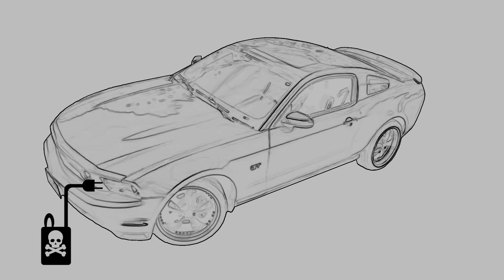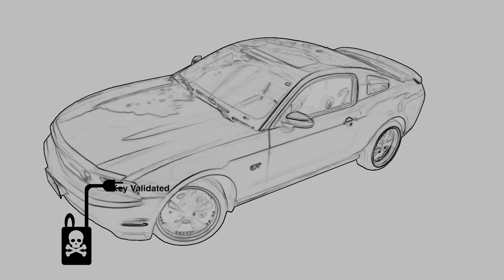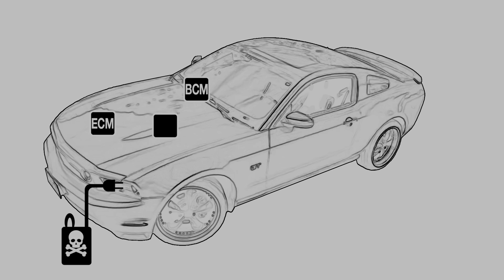Once the CAN injector is connected to the CAN bus, it sends key-validated signals as if from the smart key receiver. CAN is a low-level protocol and does not support encryption. To deactivate the immobilizer, the signal is sent directly to the engine control unit, bypassing the body control unit that has the RFID verification.